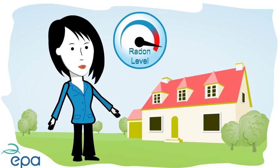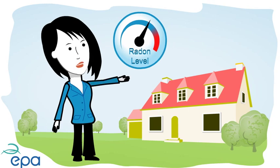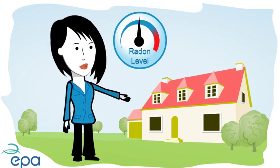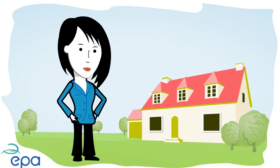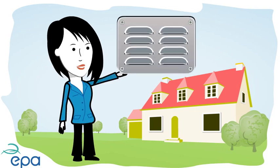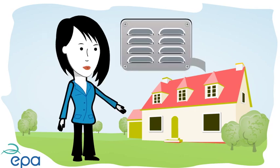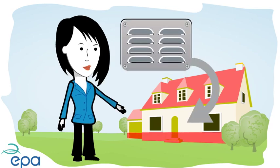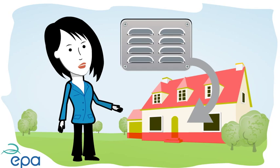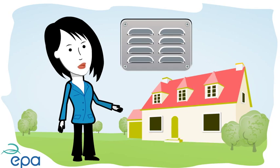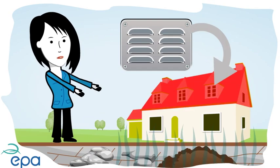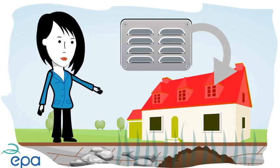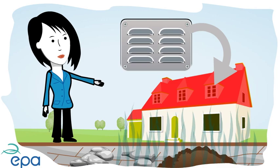This can reduce radon levels in your home by up to 50%. It is important that increased ventilation is installed at ground level only, as additional ventilation on upper floors may increase the flow of radon from the ground into your home.